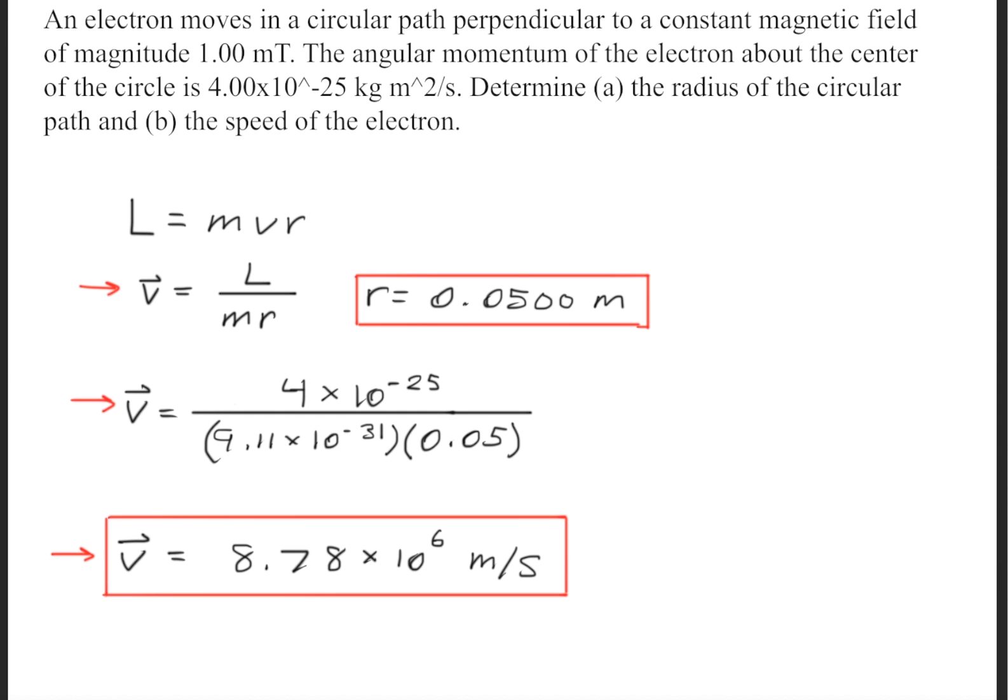And solving for that, we'll get a velocity of about 8.78 times 10 to the 6th meters per second.